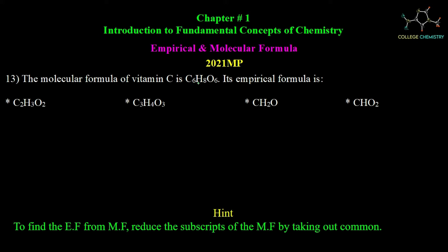If we remove the common factor 2, we divide each subscript by 2: divide by 2, divide by 2, divide by 2. So C3H4O3 is the correct empirical formula.